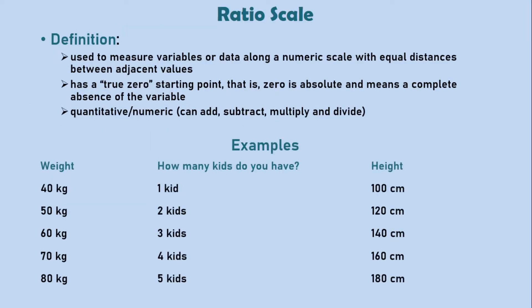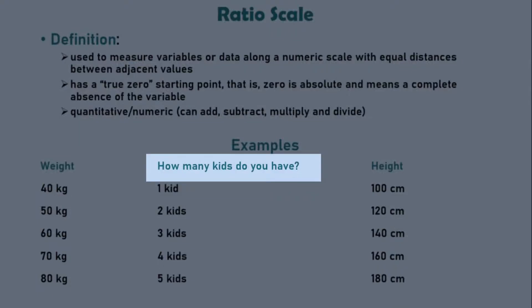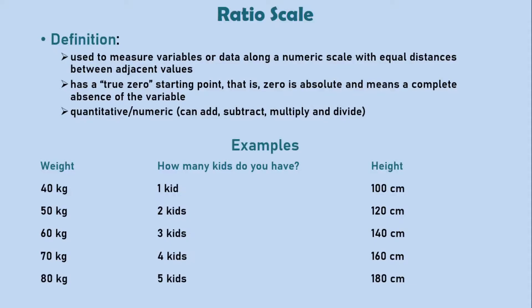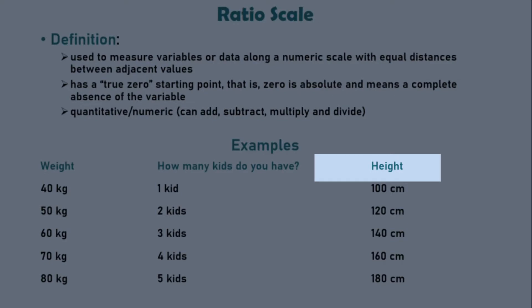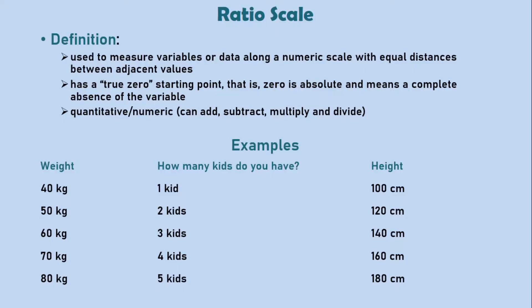Let's look at other examples. When you are asked how many kids do you have, a person who responds with zero would mean that the person has no kids at all. The variable which is being measured, which is the number of kids, is absent. Also, let's look at height. No matter how short a person is, he or she can never have a negative height. I mean, what would that even imply?